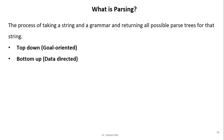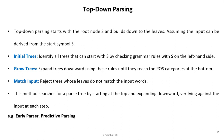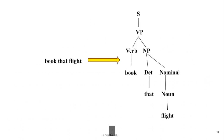Parsing is the process of taking a string and a grammar and returning all possible parse trees for that string. There are two approaches: top-down, which is goal-oriented, and bottom-up, which is data-oriented. Top-down parsing starts with the root node S and builds down to the leaves, assuming the input can be derived from the start symbol. We identify all trees that can start with S, check grammar rules with S on the left-hand side, then expand trees downward until reaching part-of-speech categories. Trees whose leaves do not match the input words are rejected. Examples include the Earley parser and predictive parsing.